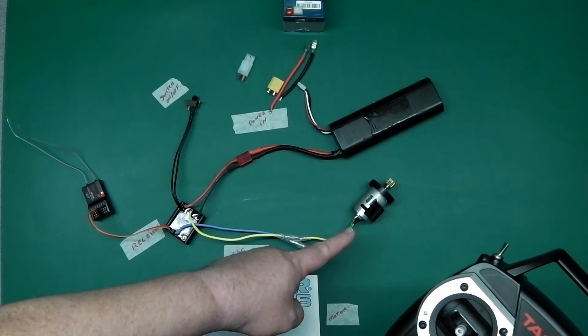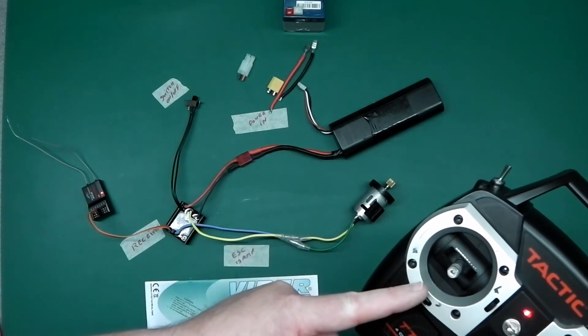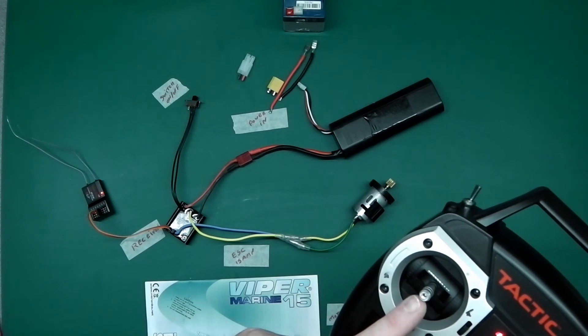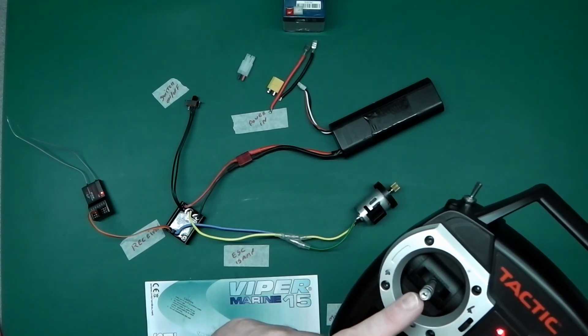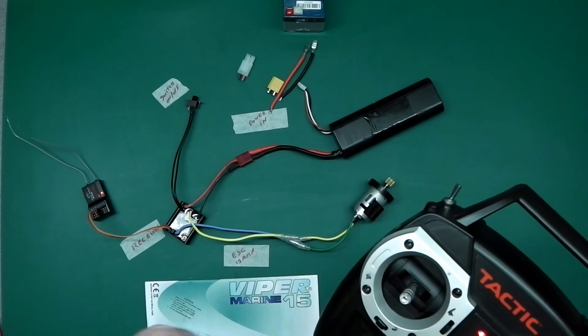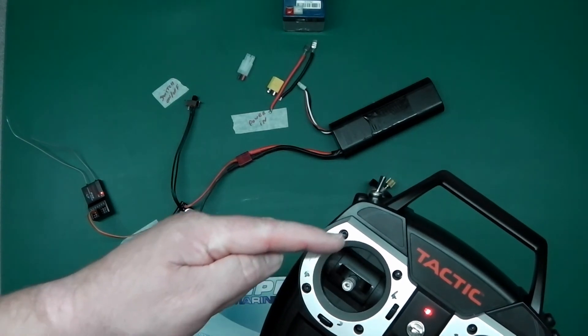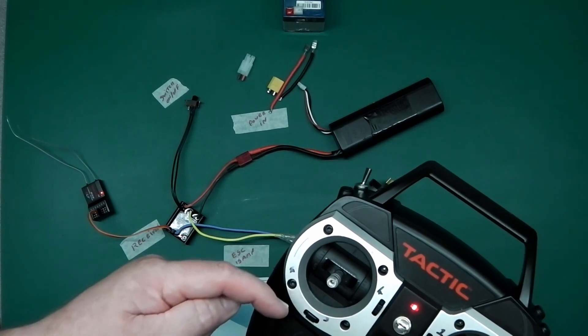Now, you'll notice that the motor is not moving again. And the stick is centralized. Let's check. Your ESC is now set up for your throttle range all the way forward and all the way backwards.